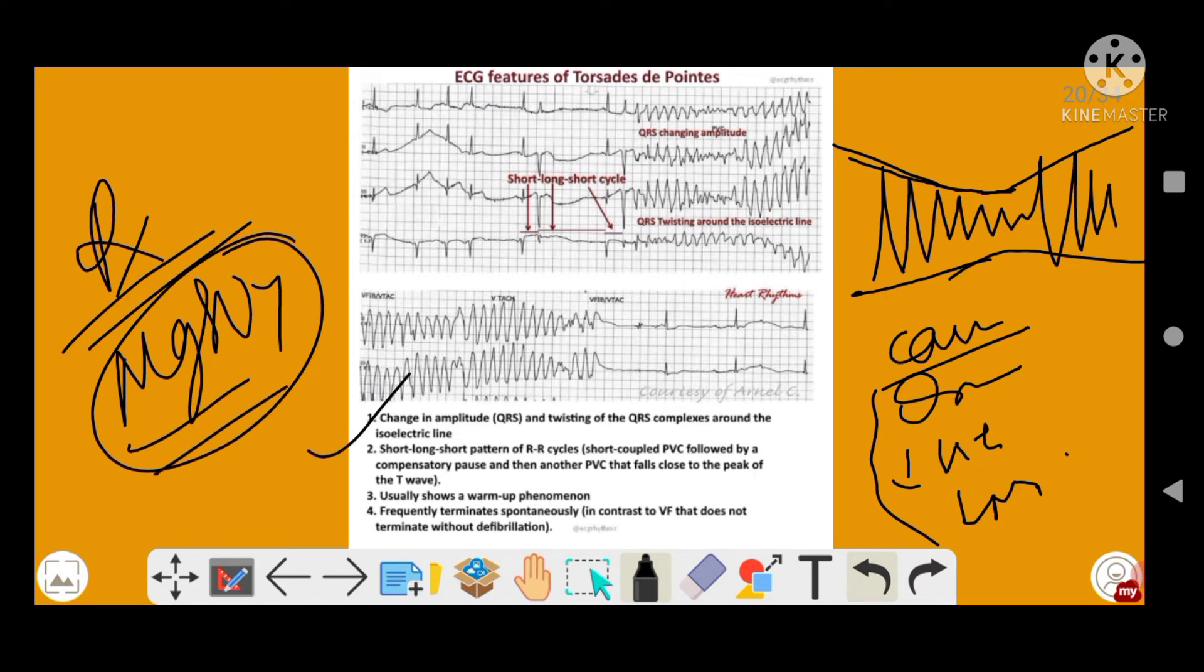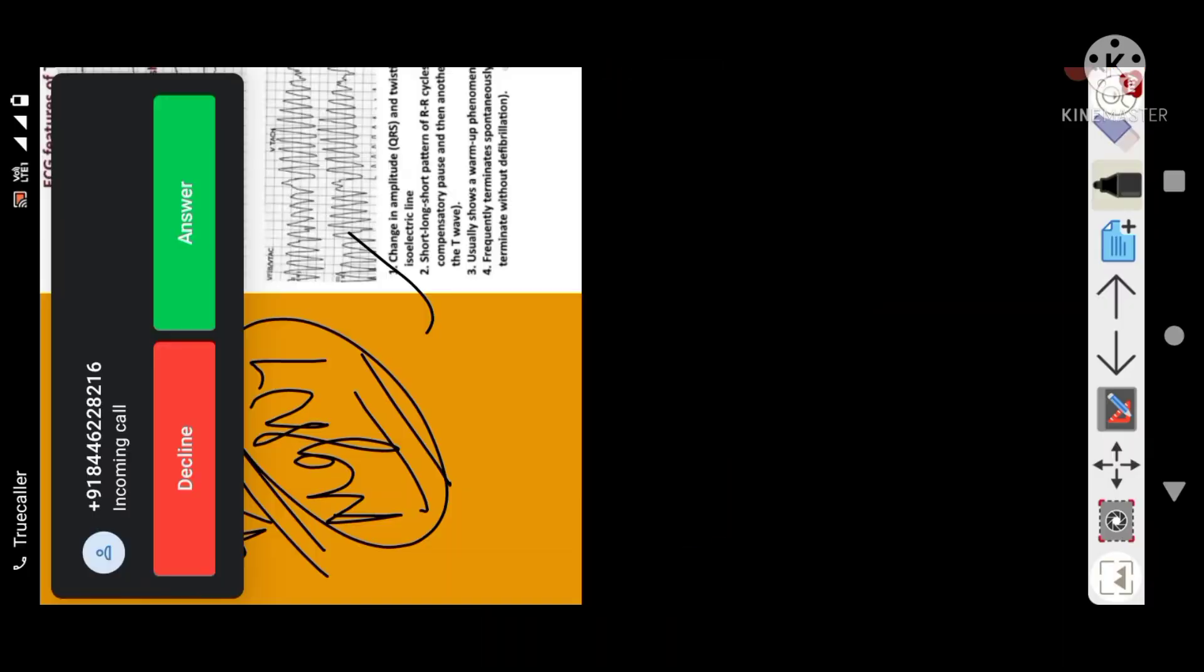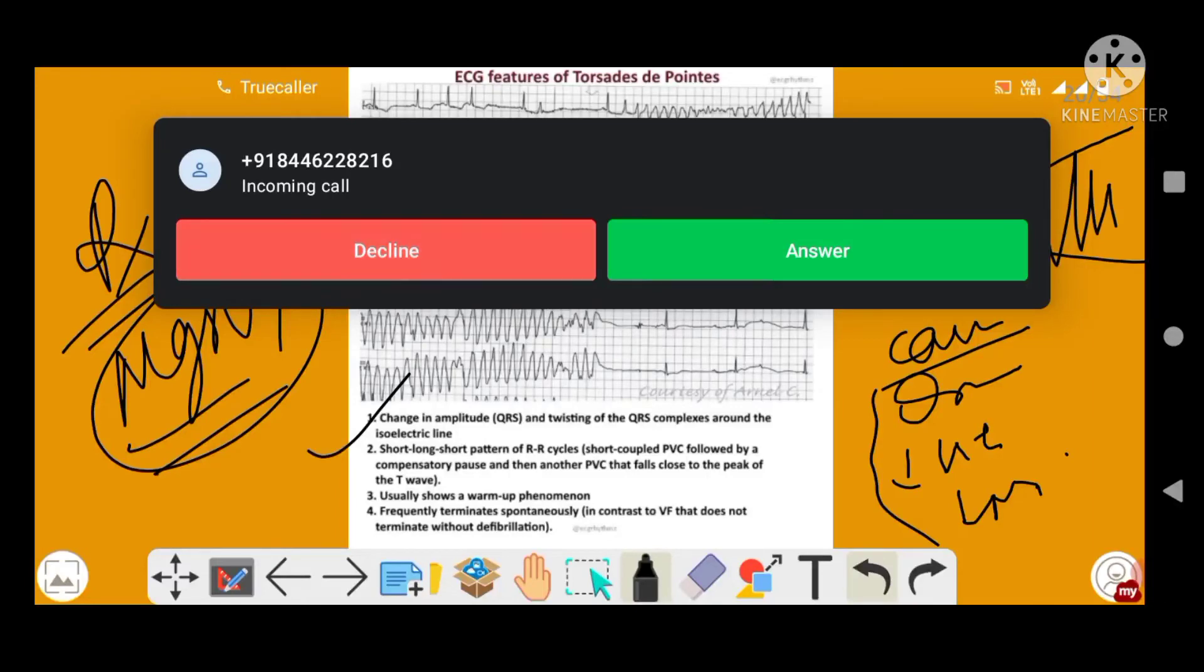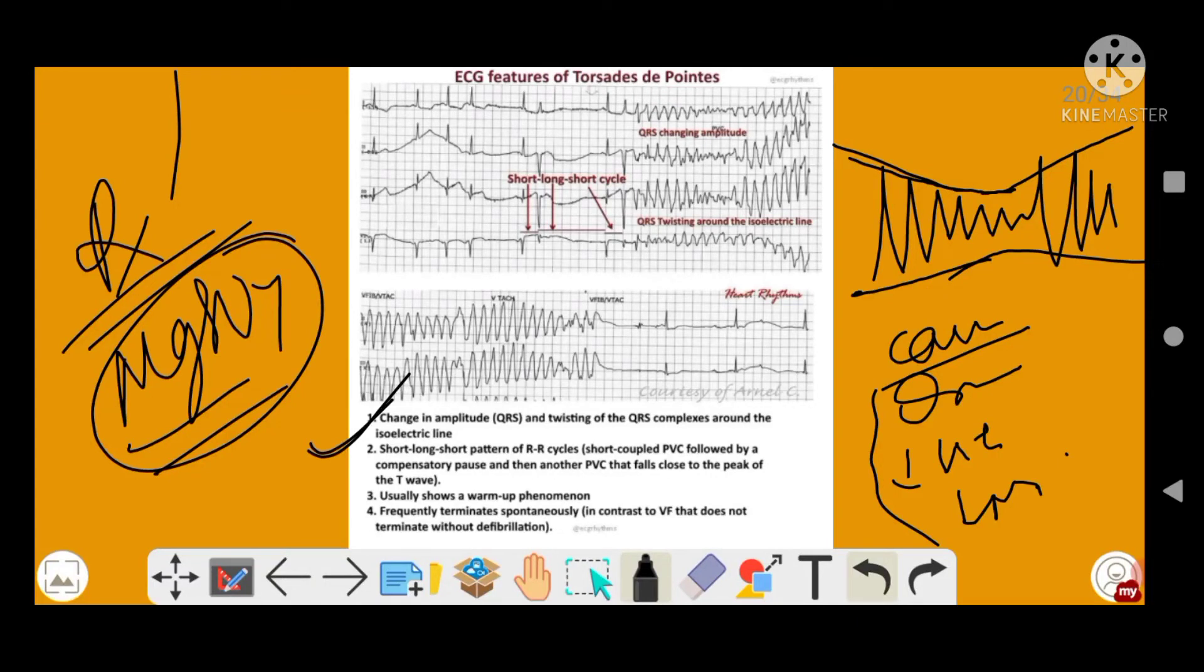So there will be change in amplitude of the QRS and twisting of the QRS complex. See, there is a change in the amplitude of the QRS and twisting of the QRS complex around the isoelectric line. Just see the changing of the amplitude of the QRS and twisting of the QRS complex.